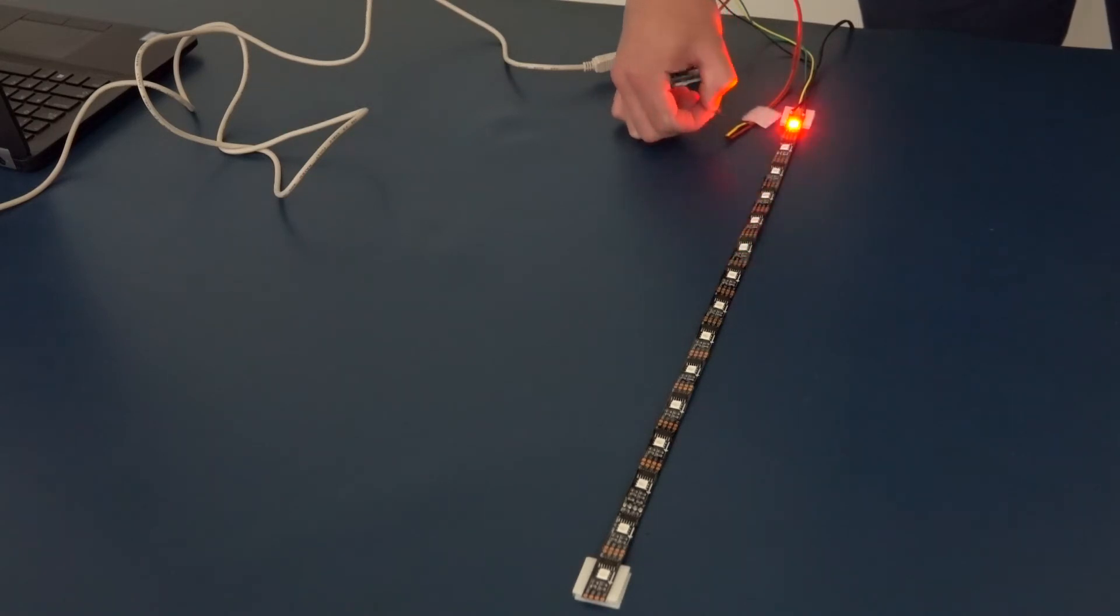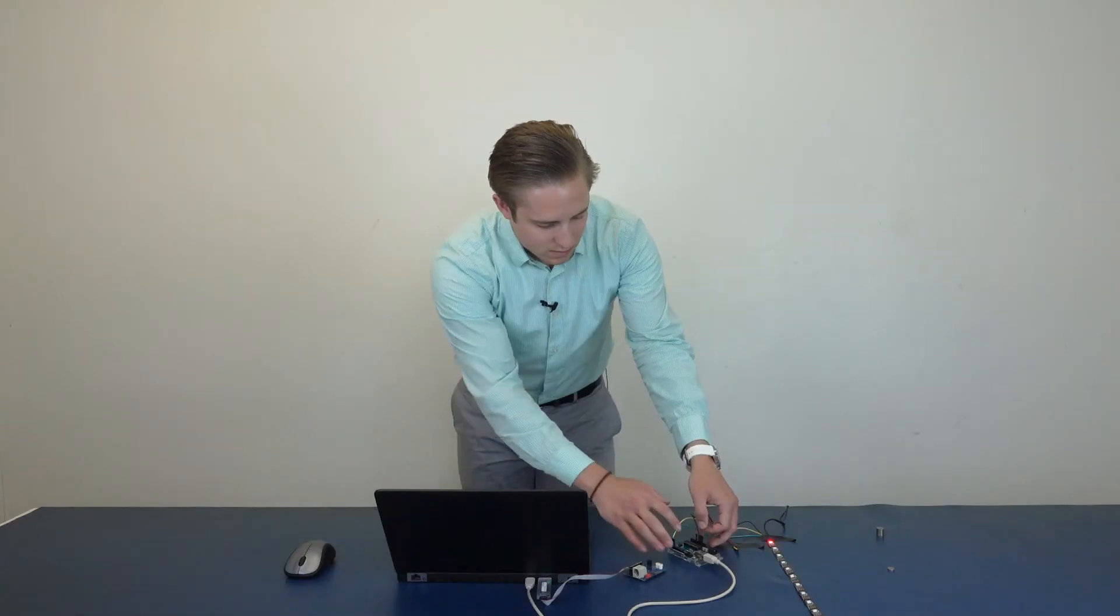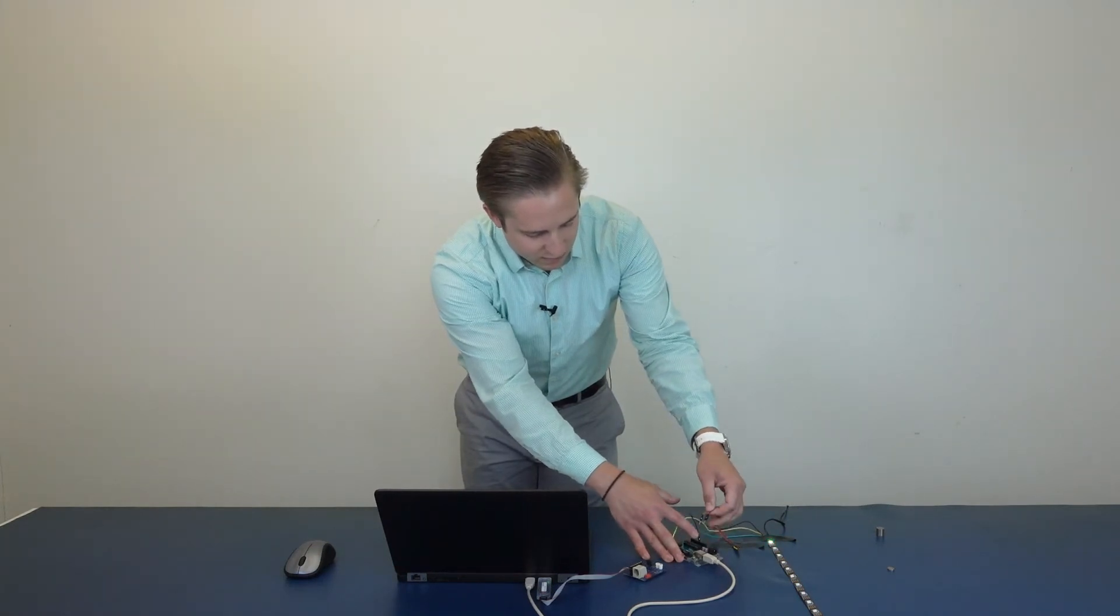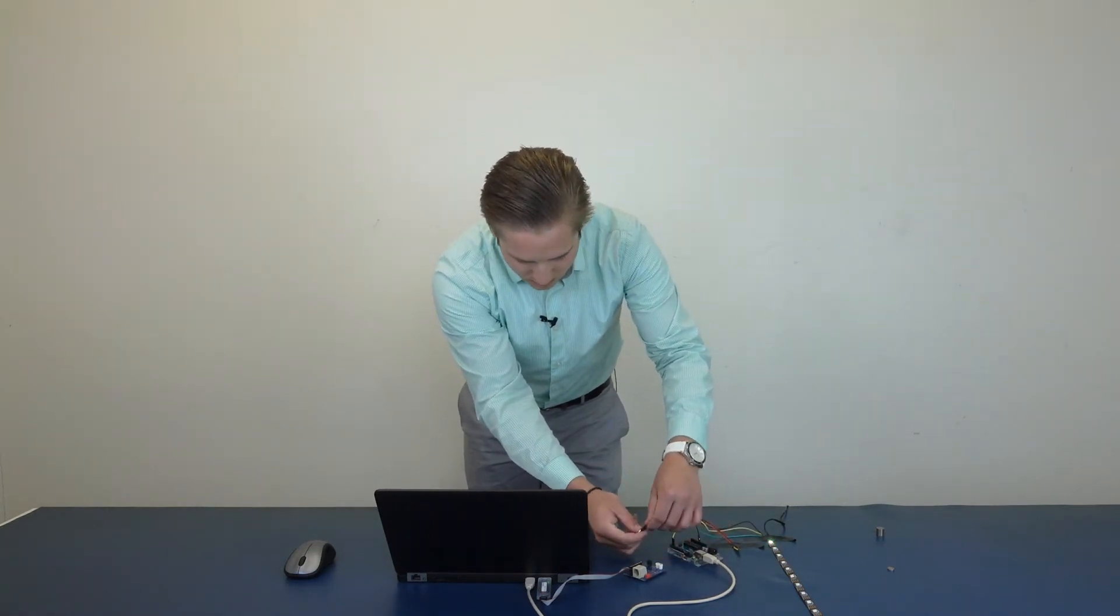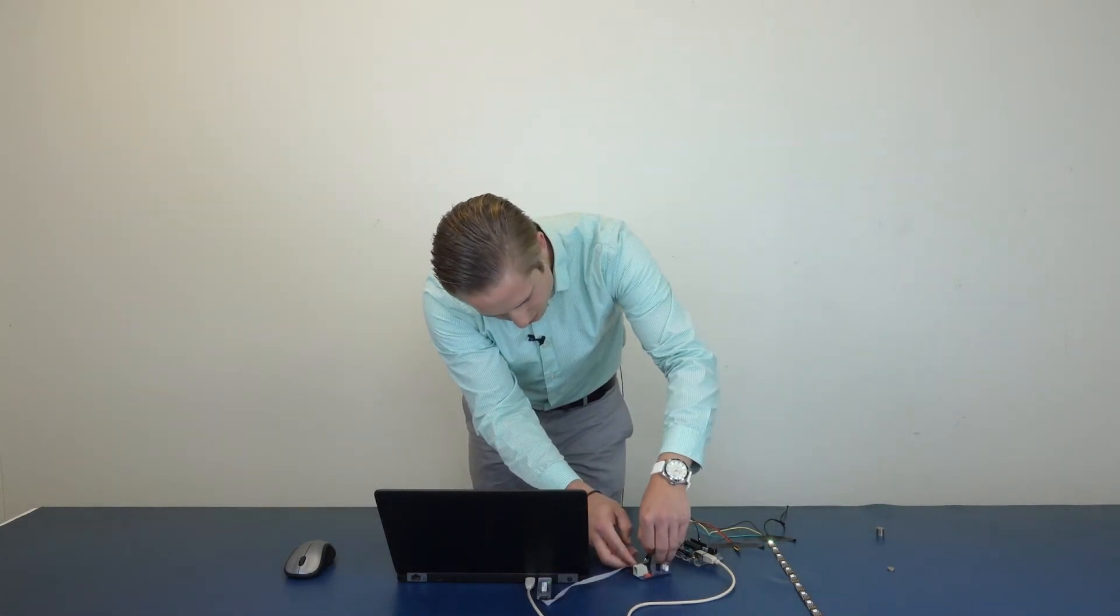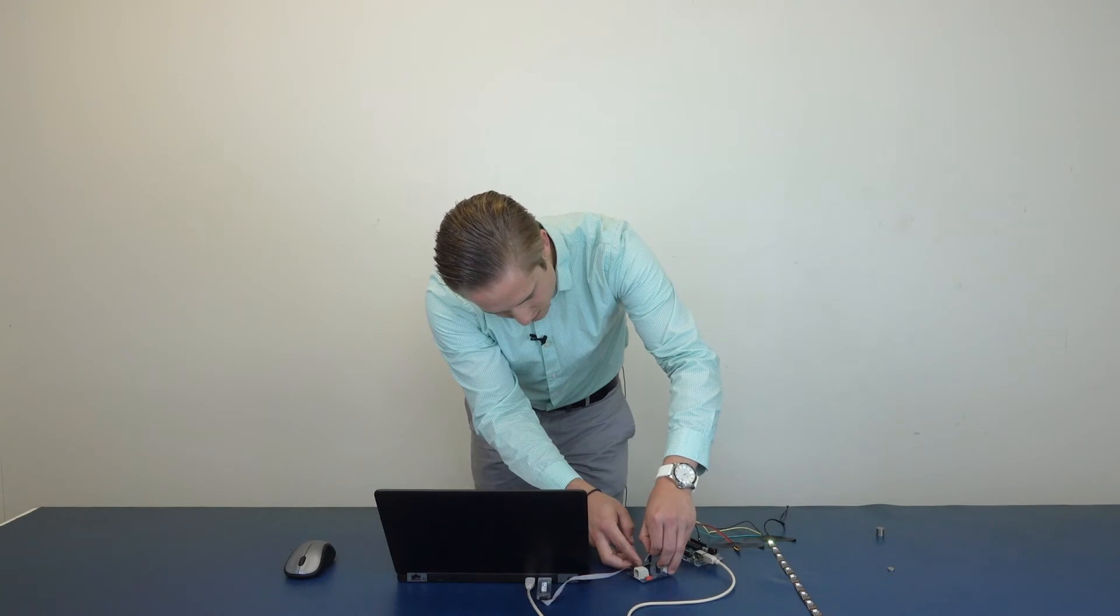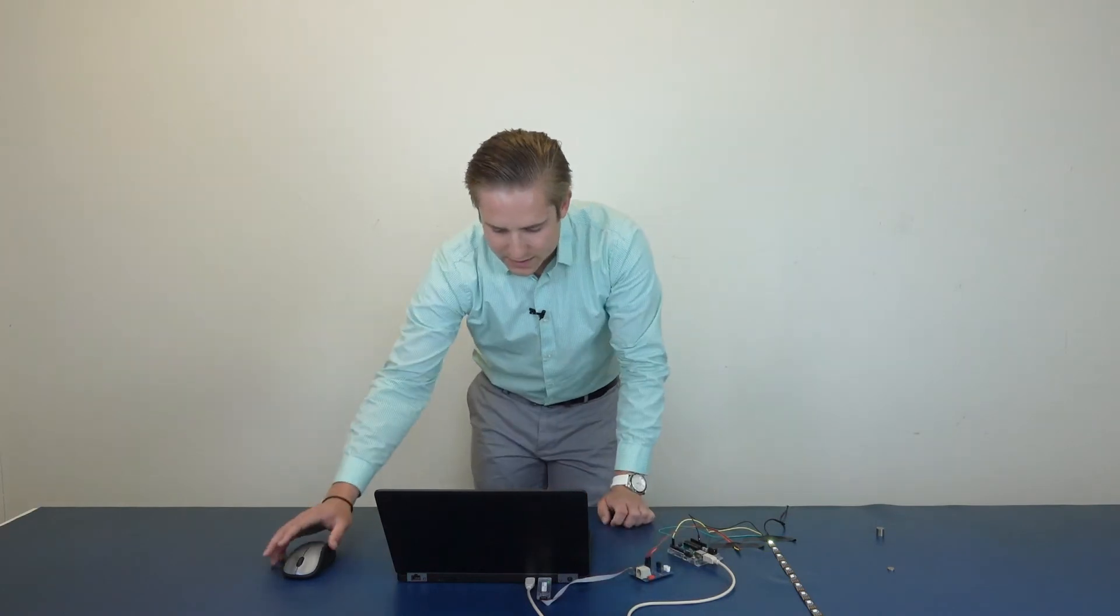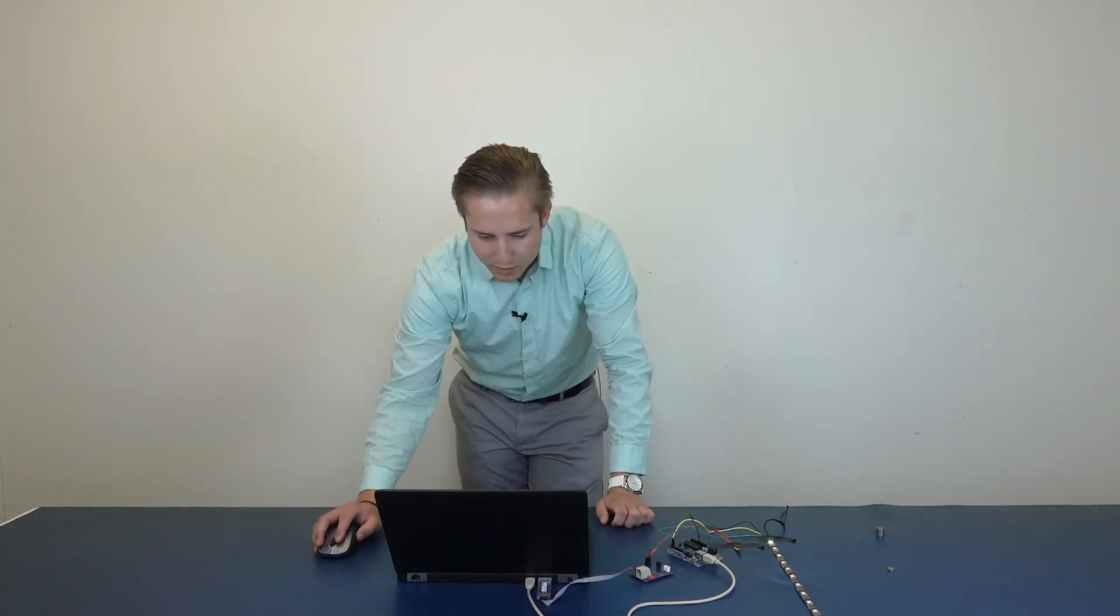So I'm going to unplug my TDK Micronis single-axis Hall sensor from the Arduino and plug it into my Hall USB extension board and USB programmer. Now that I've got it plugged in here, I'm going to open up the Hall 24 family programming interface.